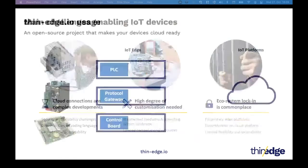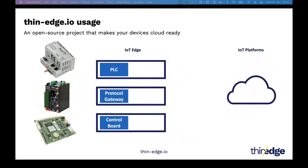This brings us to the ThinEdge.io open source project. These are the challenges that we wanted to address with ThinEdge.io. The main objective of ThinEdge.io is to make devices cloud-ready without any ecosystem or platform lock-in. Therefore, we are creating a modular and lightweight IoT device framework — that is why we call it ThinEdge — which can be deployed on resource-constrained devices such as PLCs or protocol gateways. It allows out-of-the-box connectivity and device management features for the specific device without relying on a specific IoT or cloud platform.